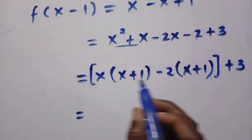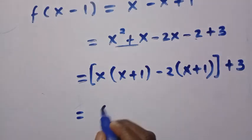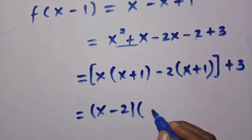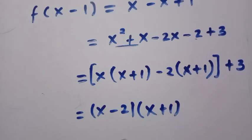Next, here is x and here is minus 2. Let's take that one together as x minus 2. And also we have x plus 1. This in bracket. And we have plus 3 here. Everything is equivalent to f of x minus 1.